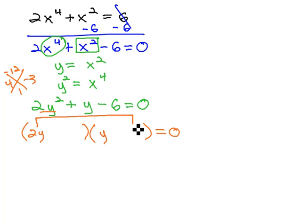On the outside, 2y times something is going to be positive 4, so 2y times positive 2. And on the inside, y times something is negative 3. And that factors the problem for us.